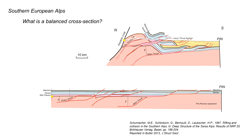So what is a balanced cross section? Well this is an example from the southern European Alps that was constructed by Schumacher et al. in the mid-1990s.